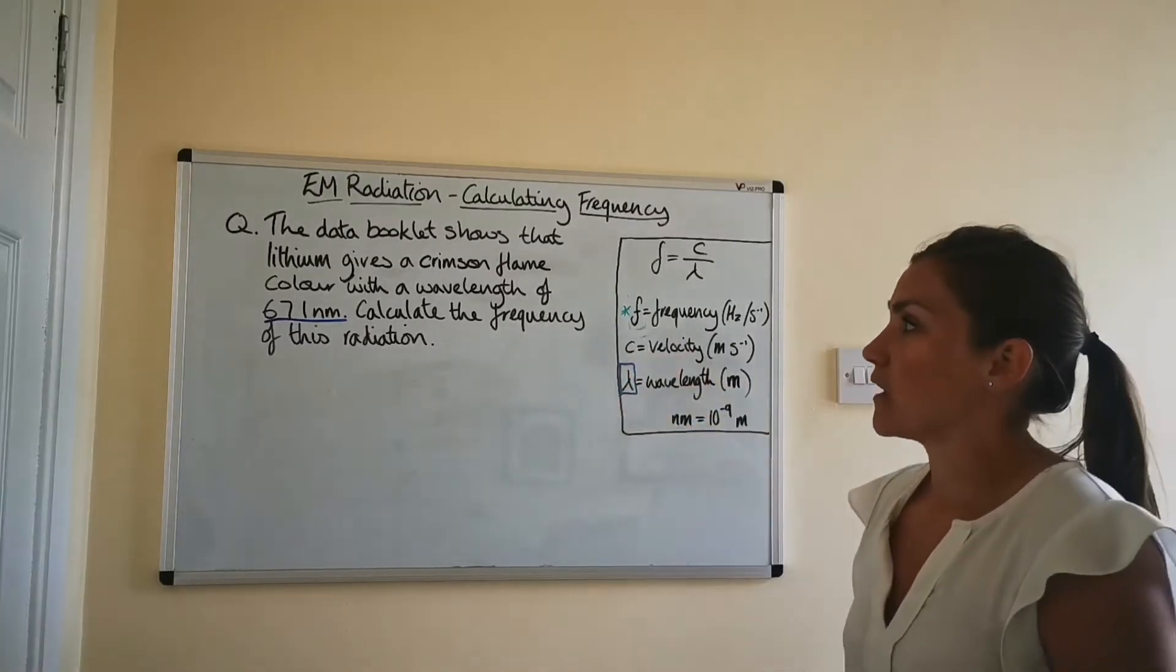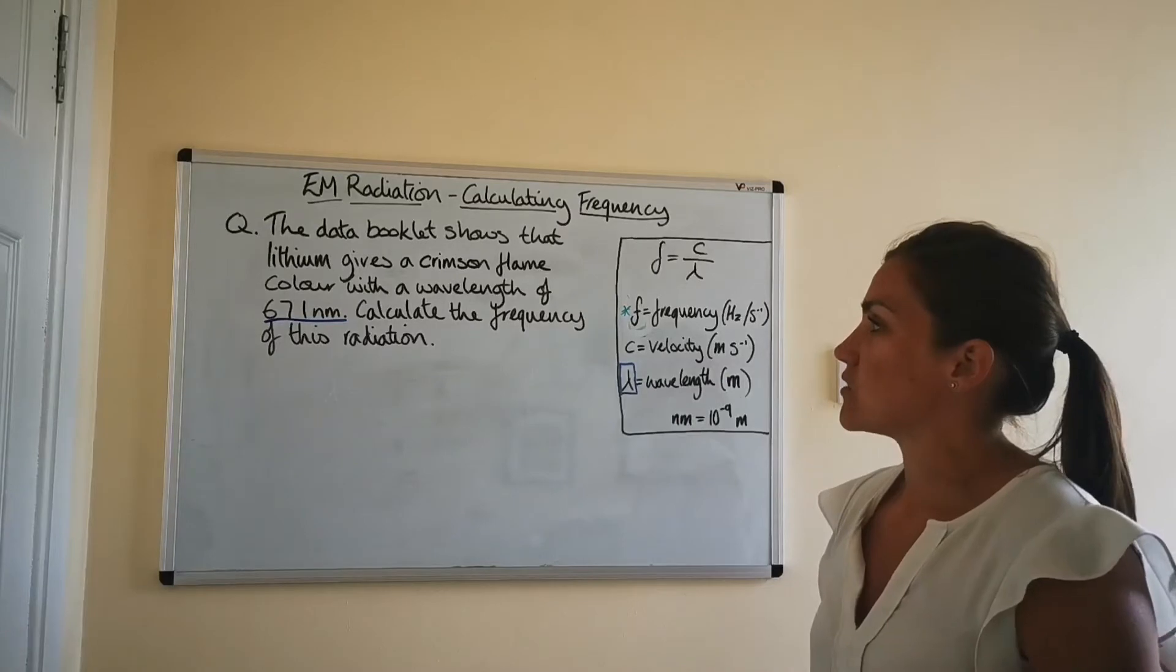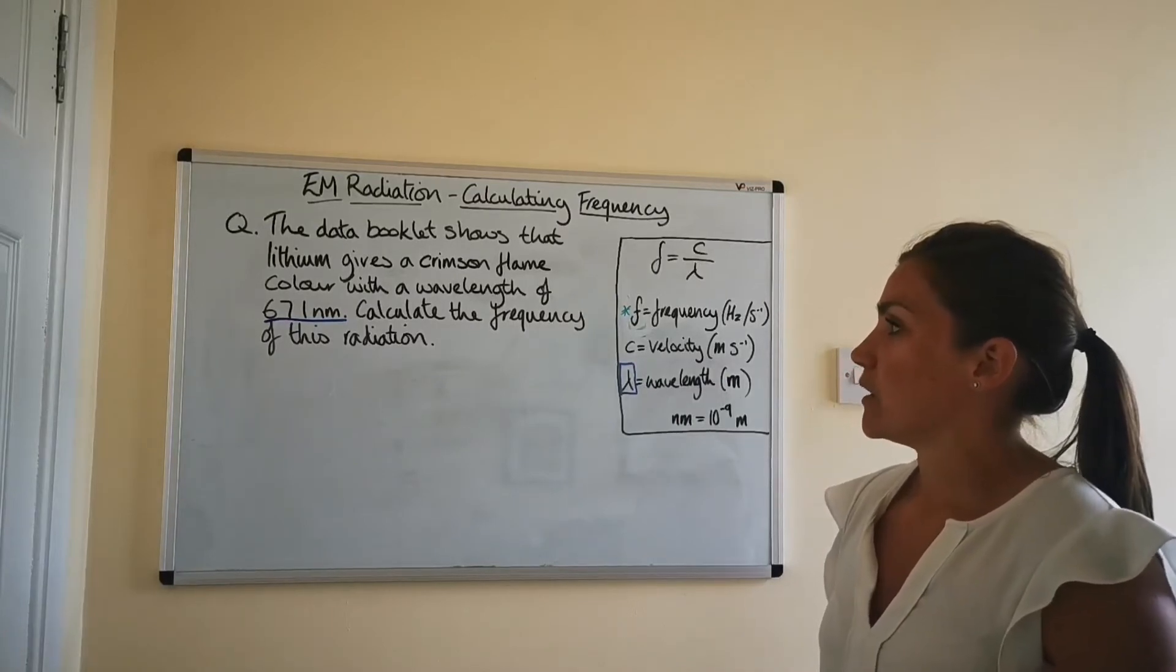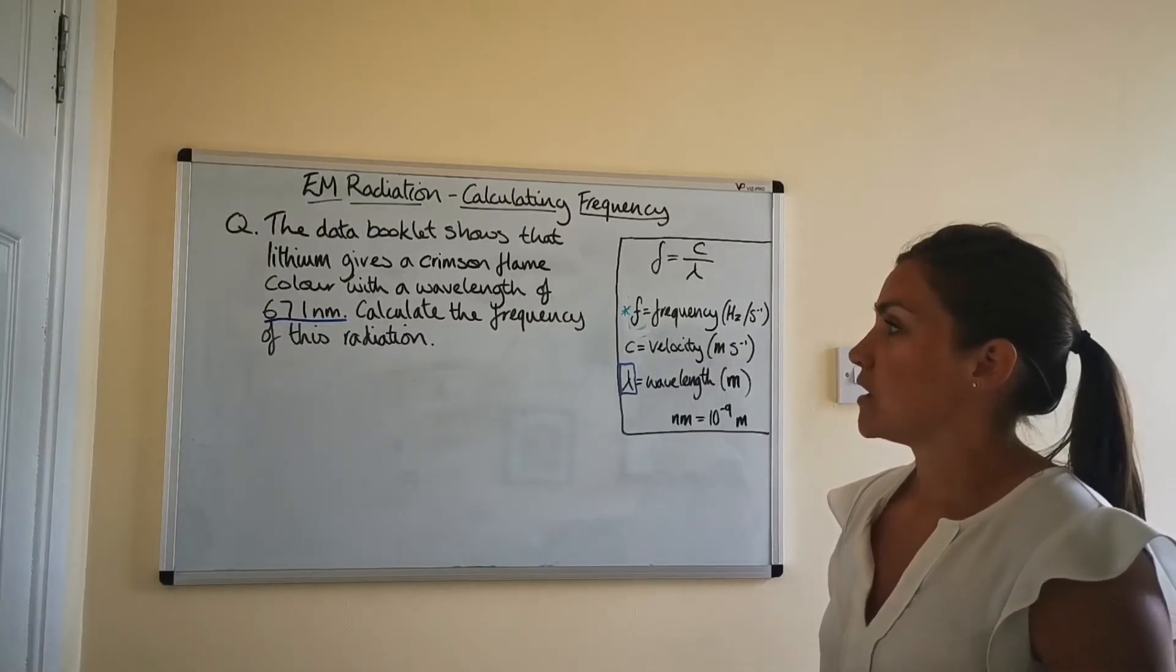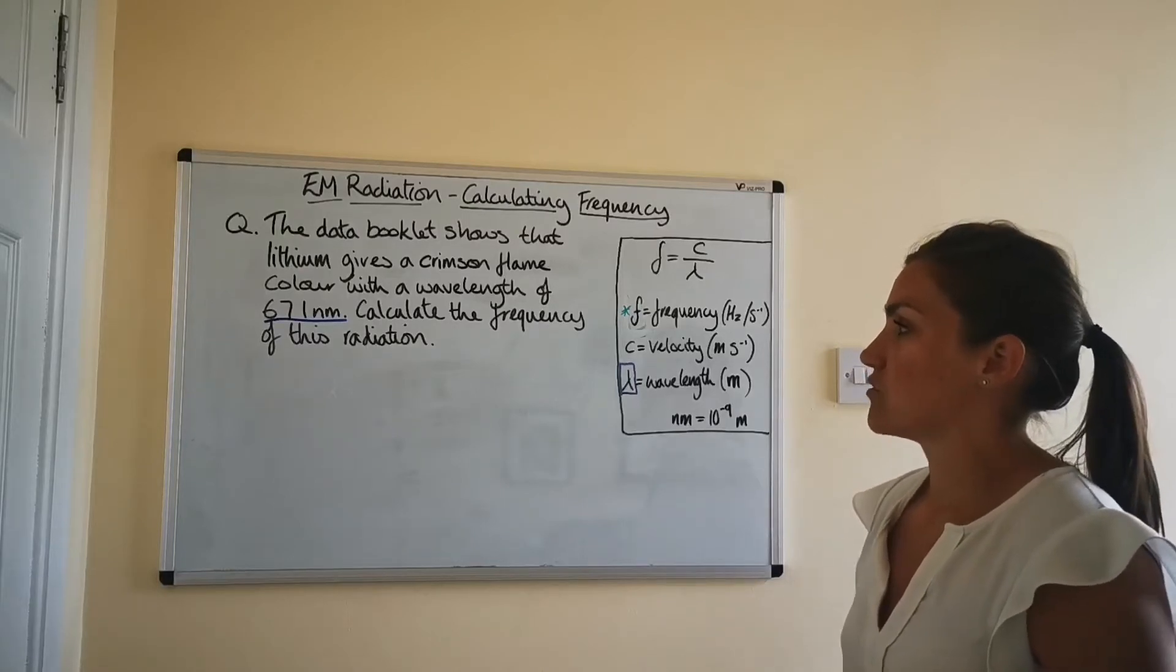If we look at our question, the data booklet shows that lithium gives a crimson flame color with a wavelength of 671 nanometers. Calculate the frequency of this radiation.